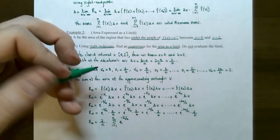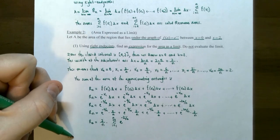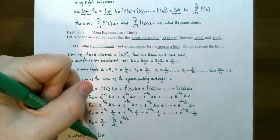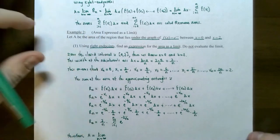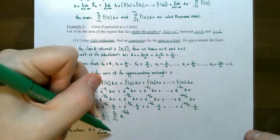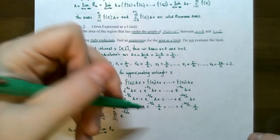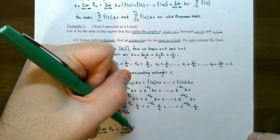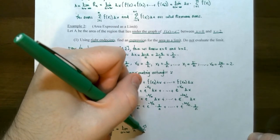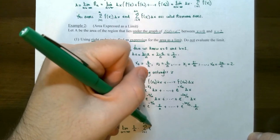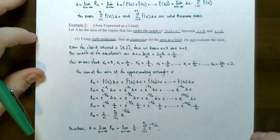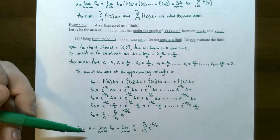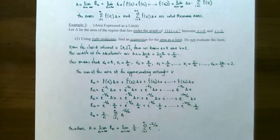Now we're ready to take the limit to find the area. Therefore, the area under the curve is the limit as n approaches infinity of the right endpoint sum: the limit as n approaches infinity of 2 over n times the sum from i equals 1 to n of e to the negative 2i over n. Whatever this limit comes out to be, that is the area under the curve — but as mentioned, this is an extremely difficult limit to evaluate.